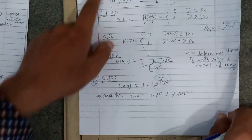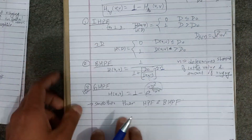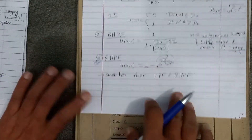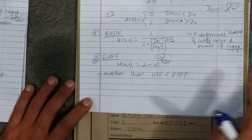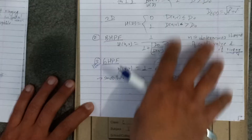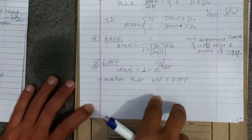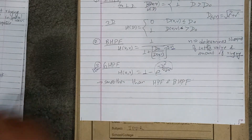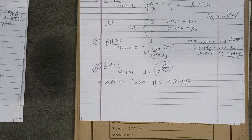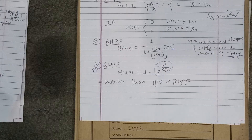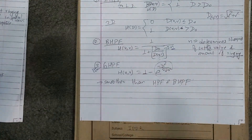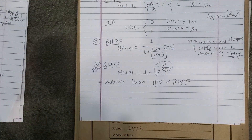High frequency increases with the Gaussian high-pass filter. We need to know the formula and the function values, and calculate them in the frequency domain. Let's see that example.